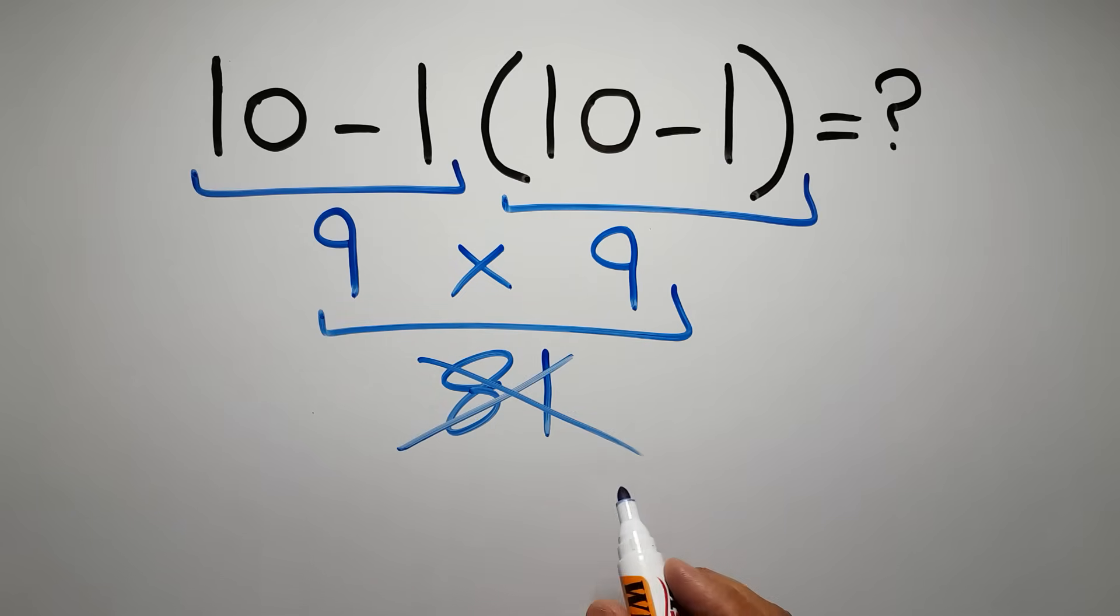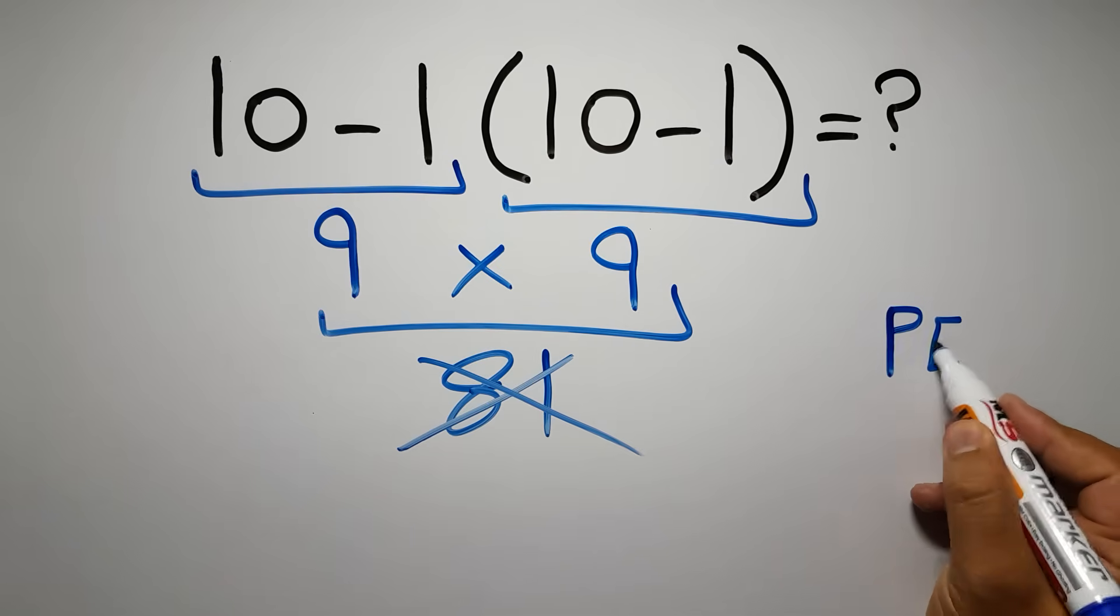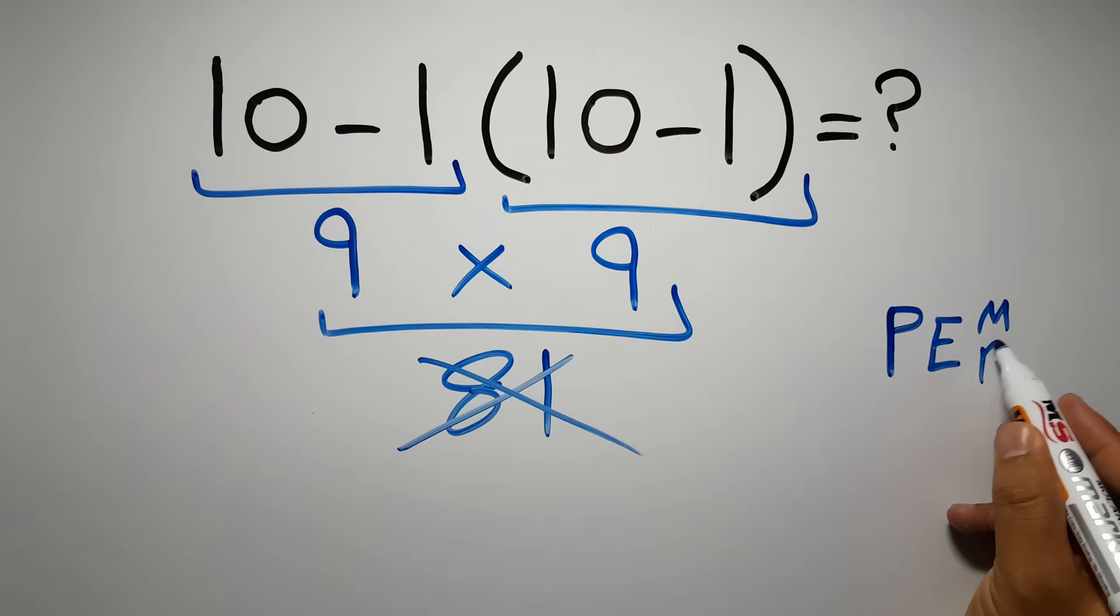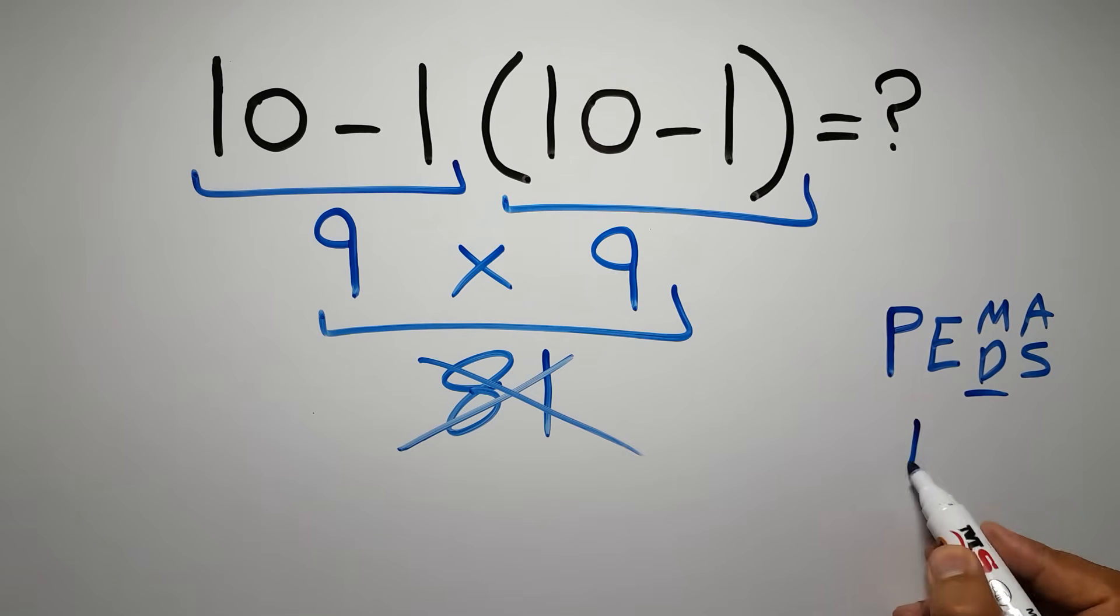Because according to the order of operations, first we have to do parentheses, then exponents, then multiplication or division, and finally addition or subtraction. Remember that multiplication and division have equal priority, and we have to work from left to right, and the same applies to addition and subtraction.